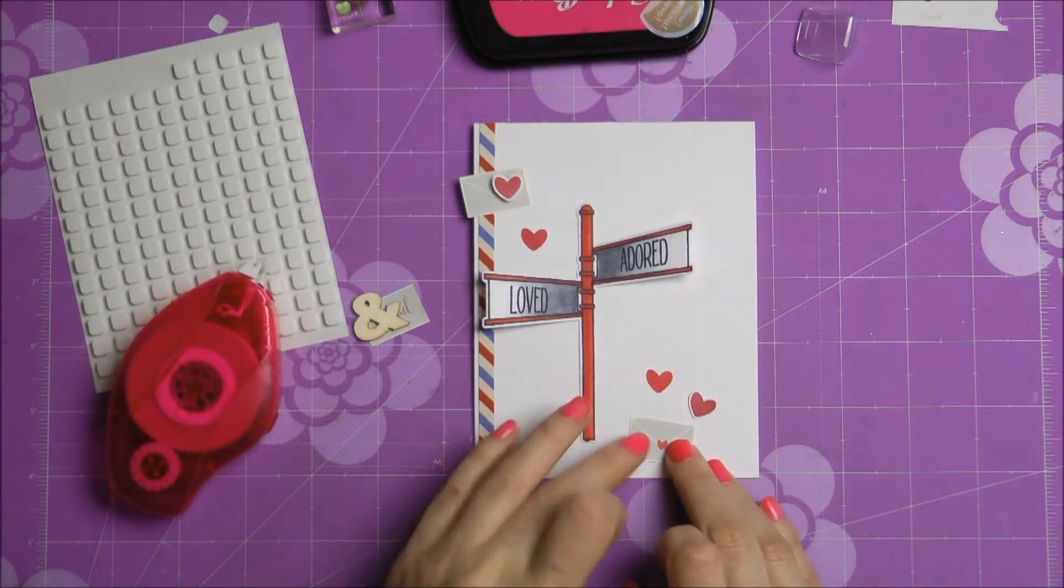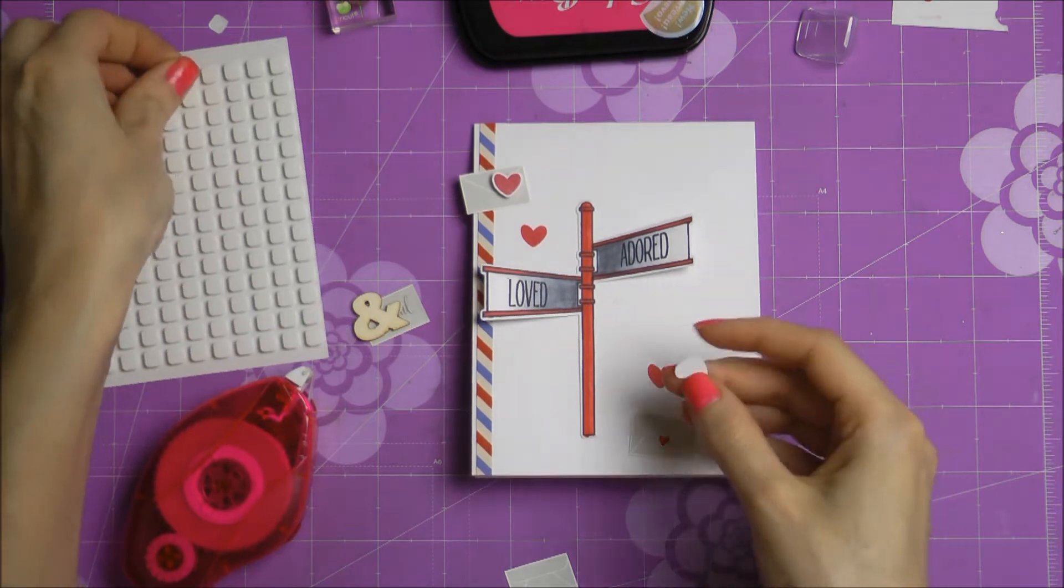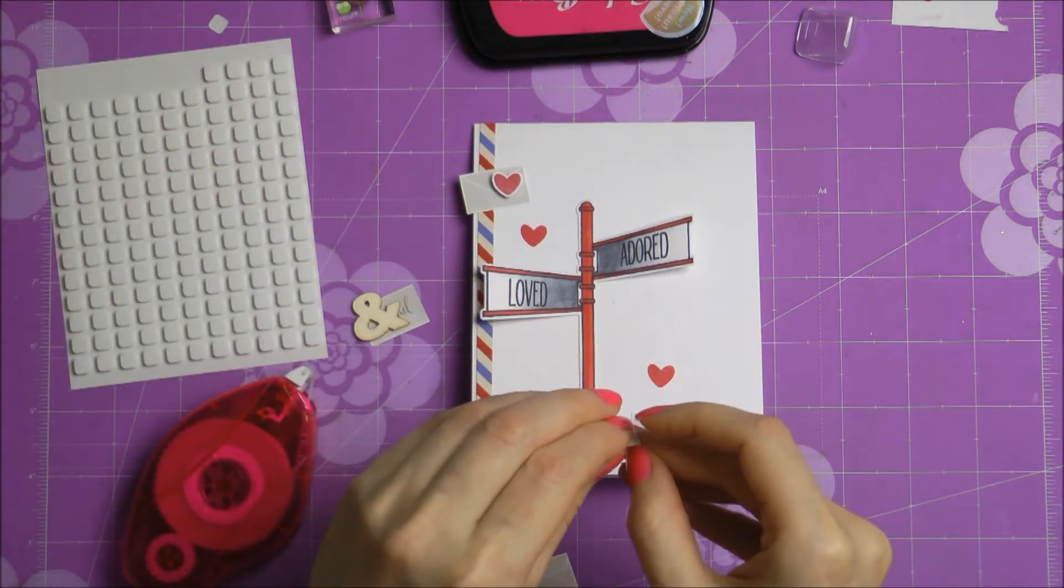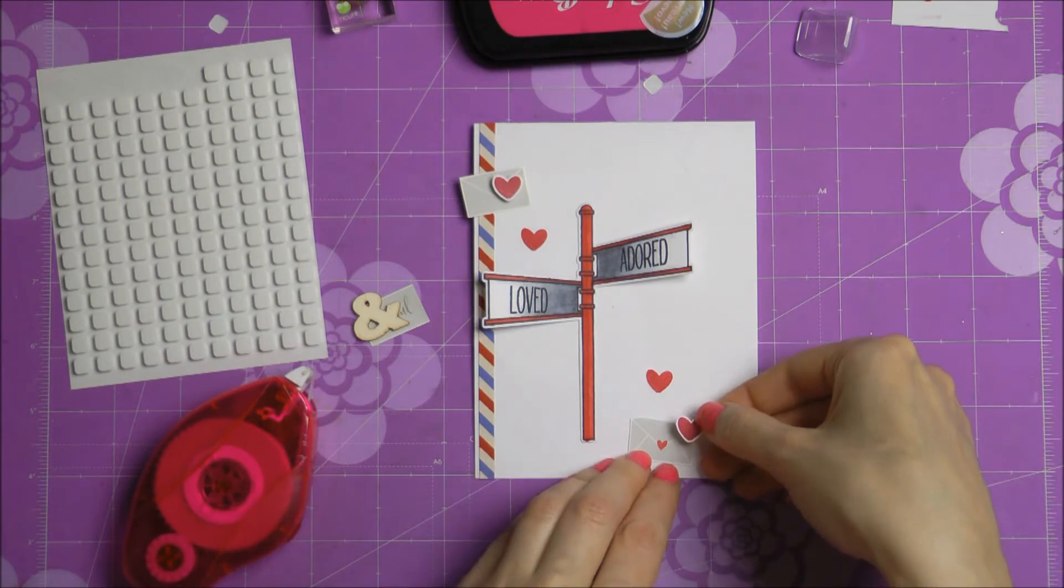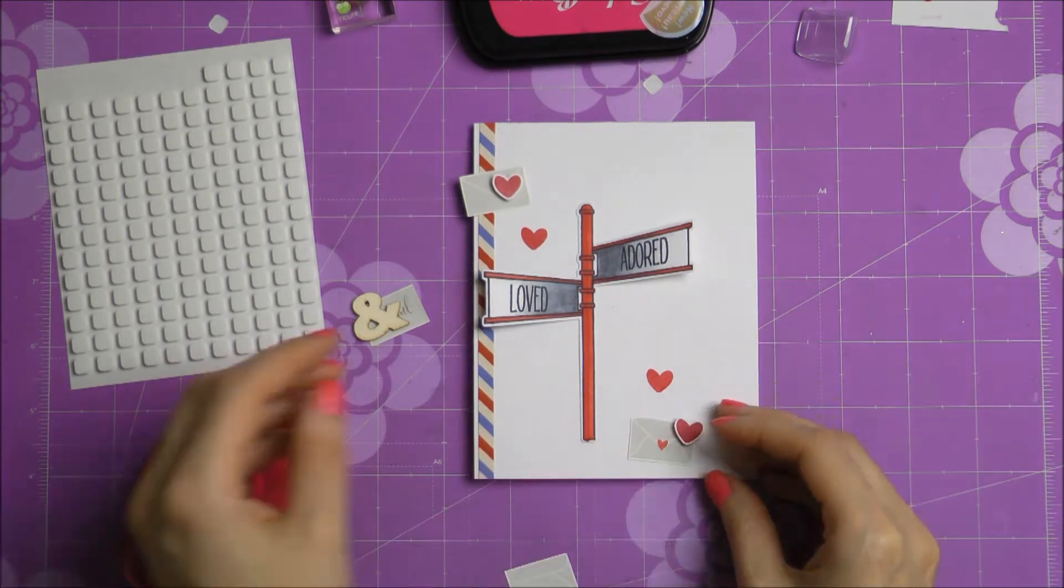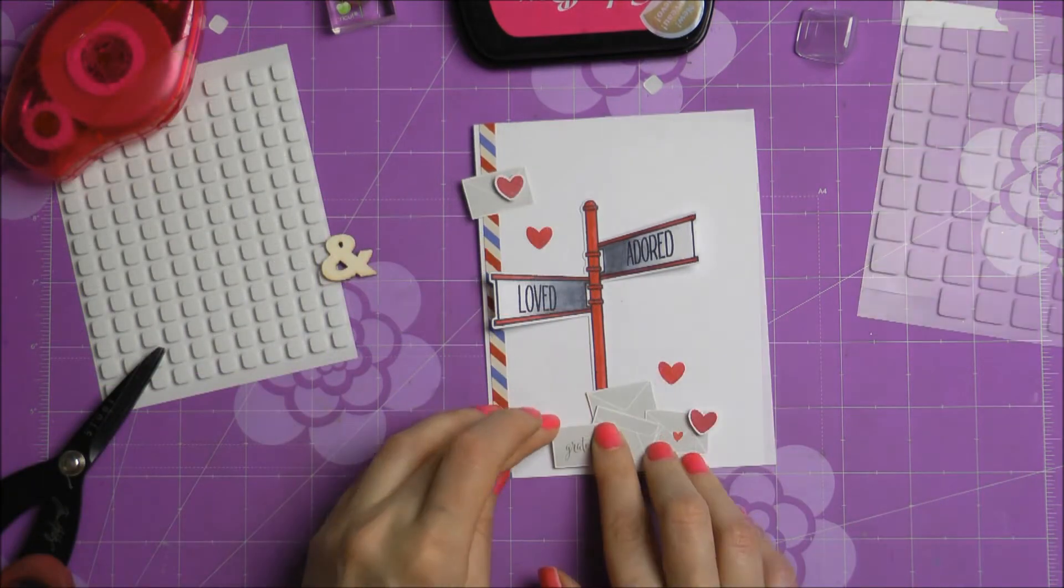Now to adhere all of the elements that I have here, I'm using adhesive from Scrapbook Adhesives. I'm using the tape runner to adhere my envelopes and I'm also using some foam dots just to adhere a few of the hearts here and there. And I'm also adding that little wooden element from Studio Calico to the top.